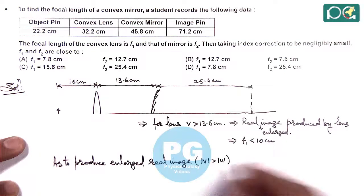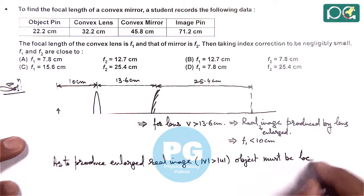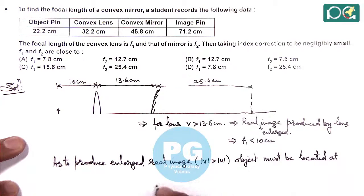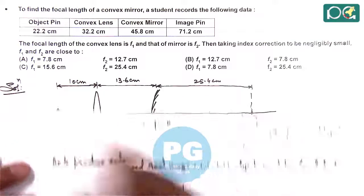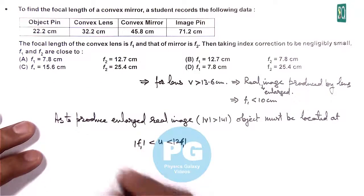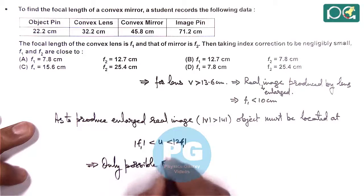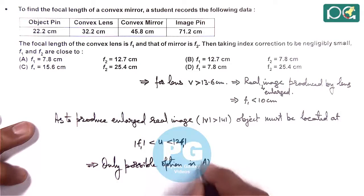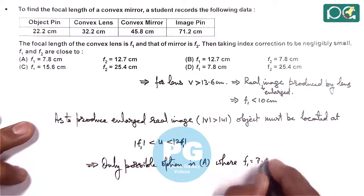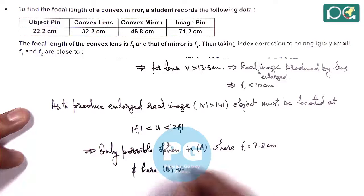Here we can say object must be located where u should be less than 2f and it is more than f. So u is 10 cm, so f1 must be less than 10 cm. In option A, f1 is less than 10 cm. This implies only possible option is A where f1 is given as 7.8 cm, and B is also not possible.